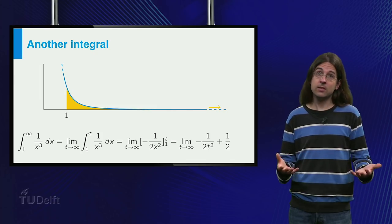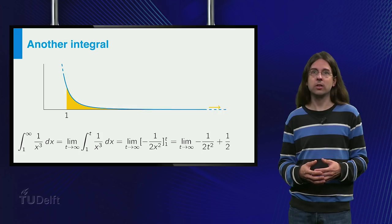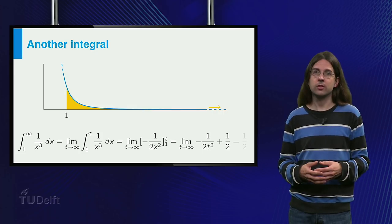Taking the limit as t goes to infinity, the minus 1 over 2 t squared term becomes zero, and the final result is a half.